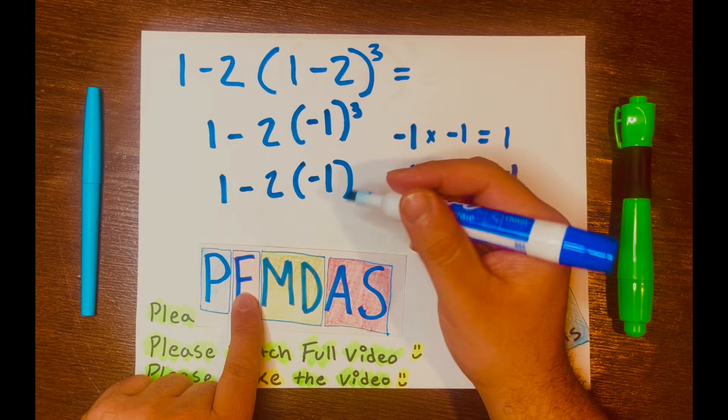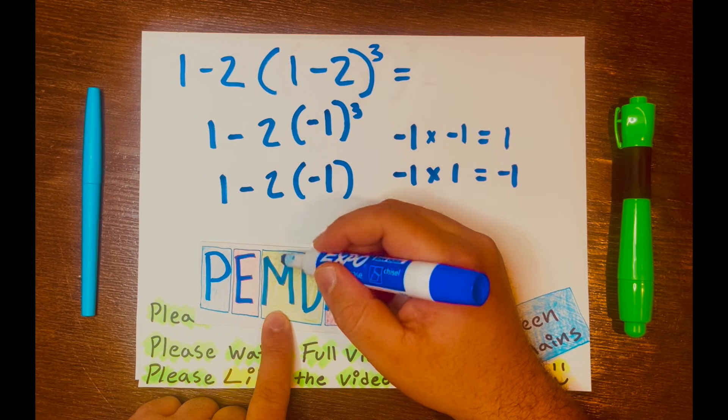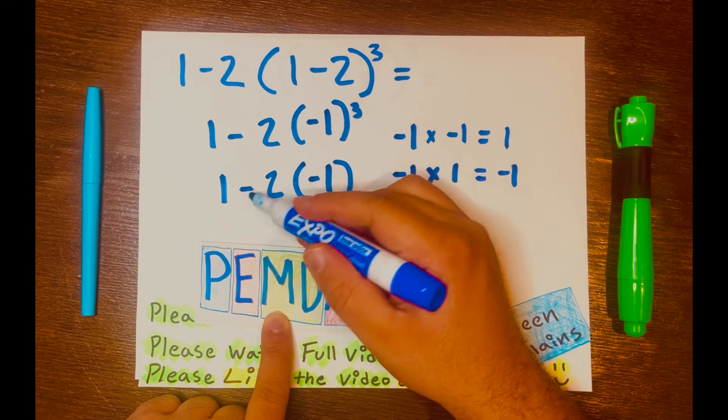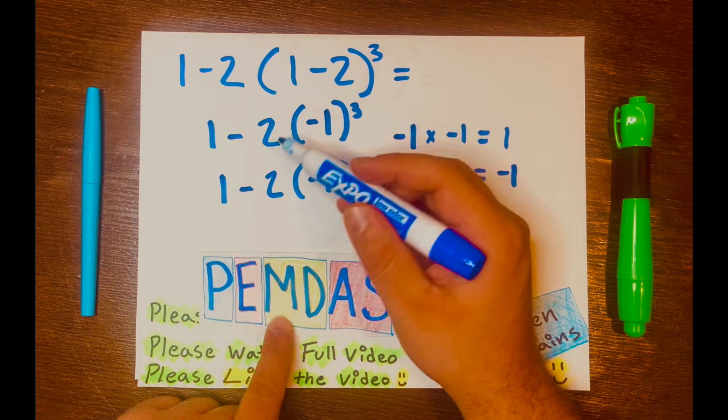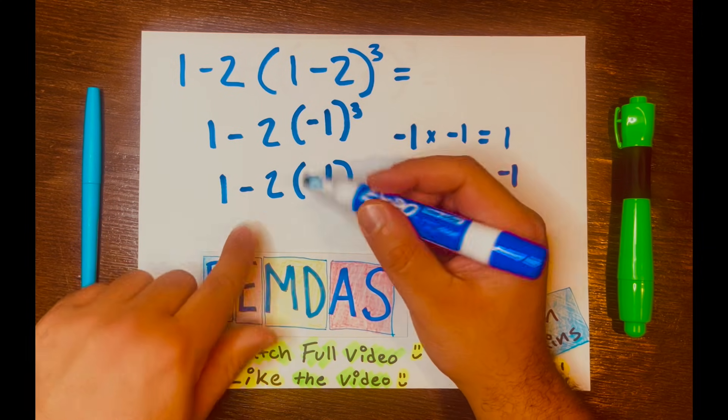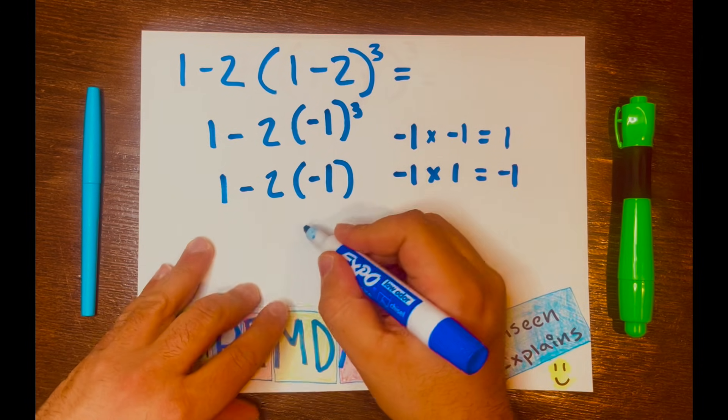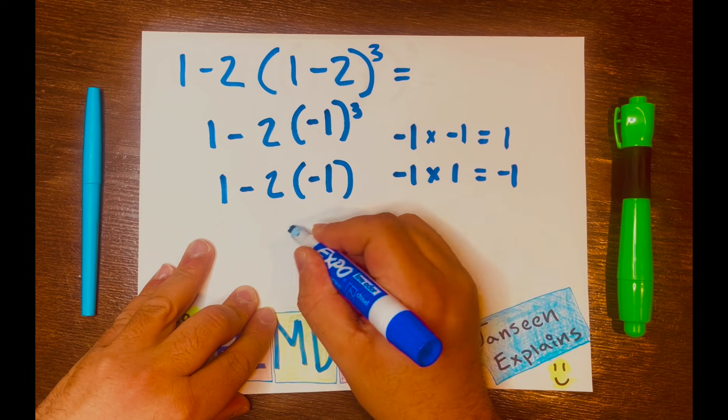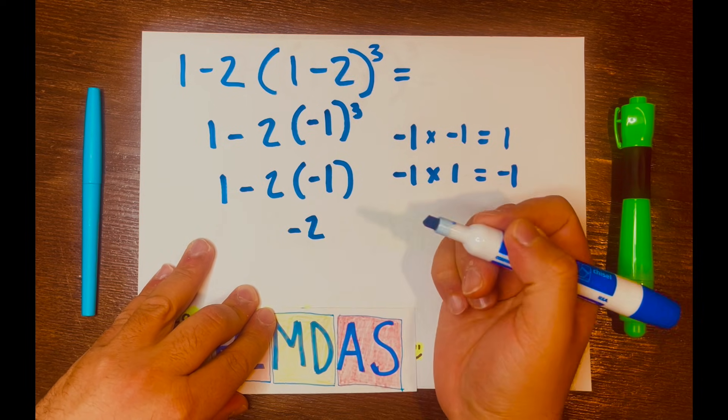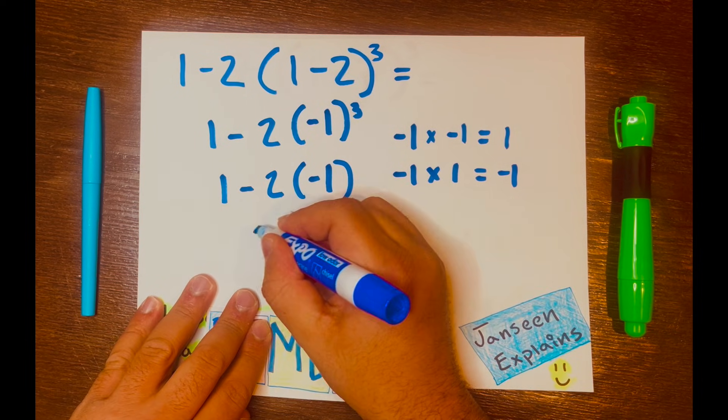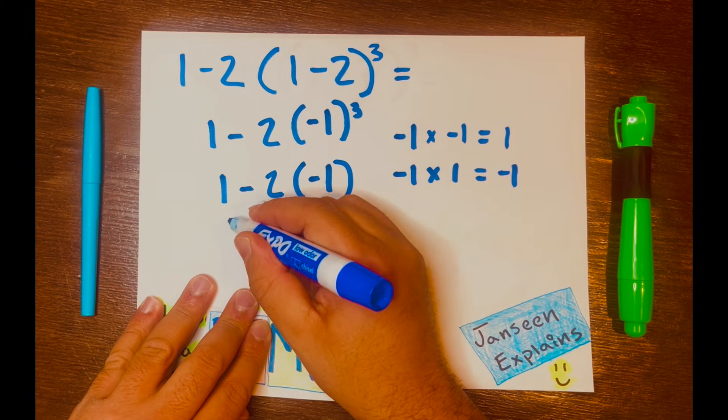Looking at PEMDAS, multiplication will go first, not subtraction. You don't start with 1 minus 2. It's 2 times negative 1, which equals negative 2. And then bring down the subtraction symbol down, and the 1 down.